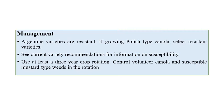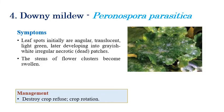For management of white rust, resistant varieties can be recommended, especially Argentine-type resistant varieties. If growing Polish-type canola, select resistant varieties. Crop rotation of at least three years can be recommended. Control volunteer canola and susceptible mustard-type weeds in rotation.